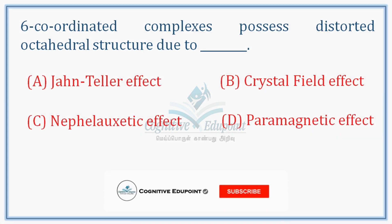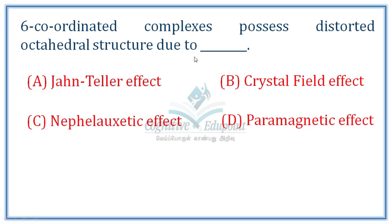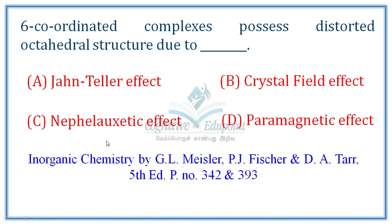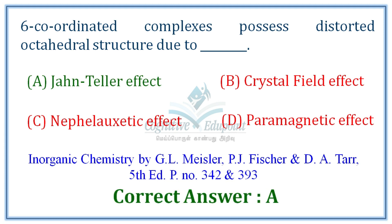Next question — this is a simple but very important topic: six-coordinated complexes possess a distorted octahedral structure due to the Jahn-Teller effect. Due to the Jahn-Teller effect, non-linear molecules deviate from their regular symmetry, causing asymmetry. The octahedral compound becomes an elongated octahedral with longer axial bond lengths. This is covered in most inorganic chemistry books. Correct answer is A.